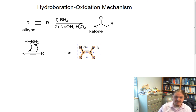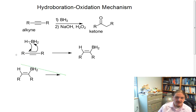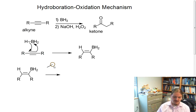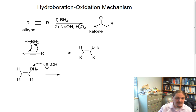And then the next part of the reaction, we get the oxidation step. Sodium hydroxide and hydrogen peroxide react to form the conjugate base of hydrogen peroxide, which can attack the boron compound.